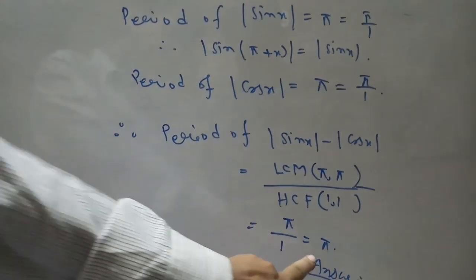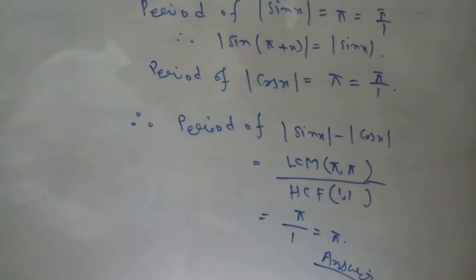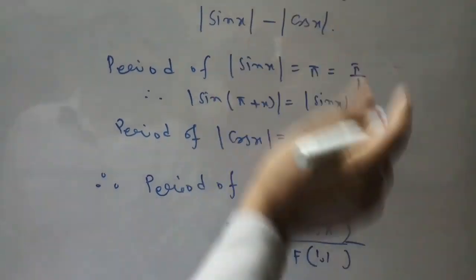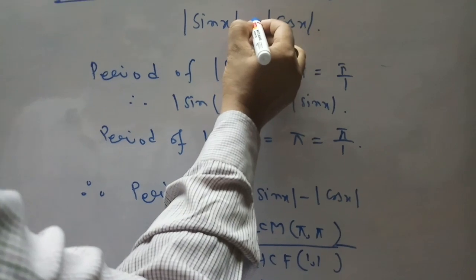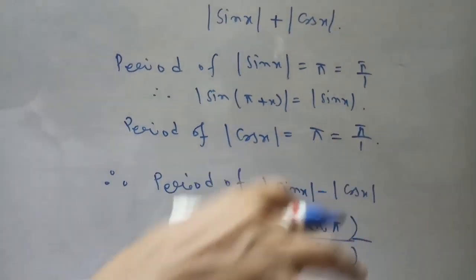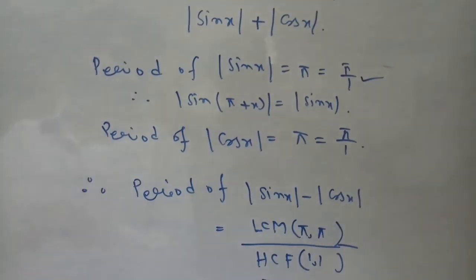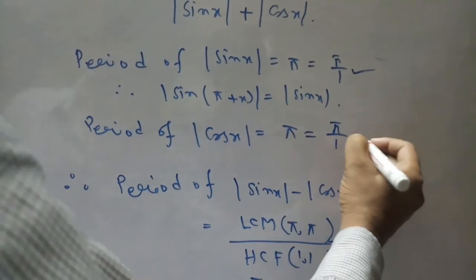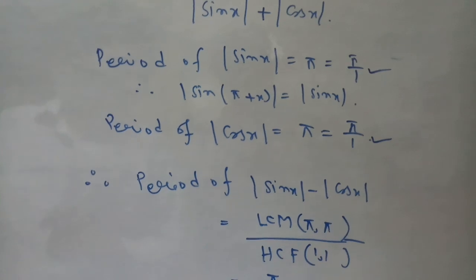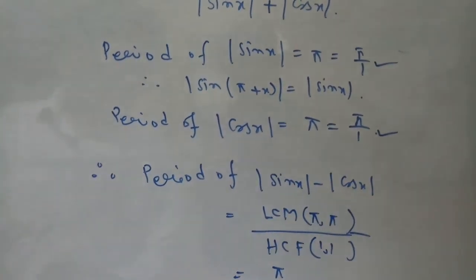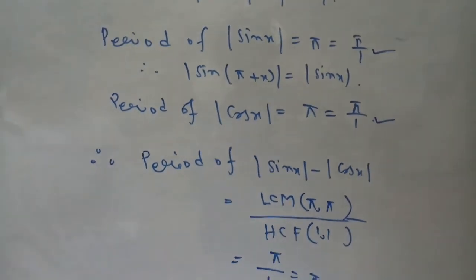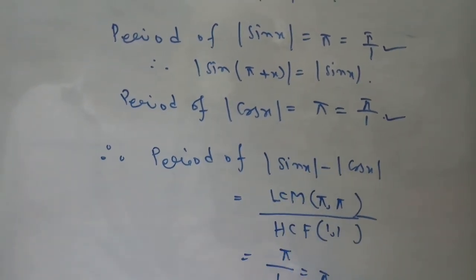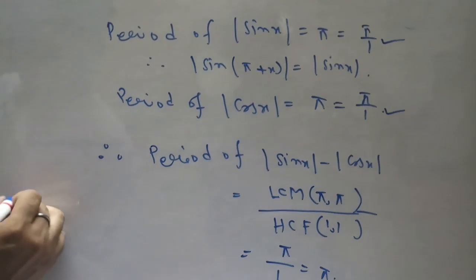But if the sum is |sin x| + |cos x|, then what will be the period? The period will be changed. The period of |sin x| is π/1 and the period of |cos x| is π/1 — those are still okay. But here there exists a minimum value. Before applying the LCM theory, the minimum value is π/2.